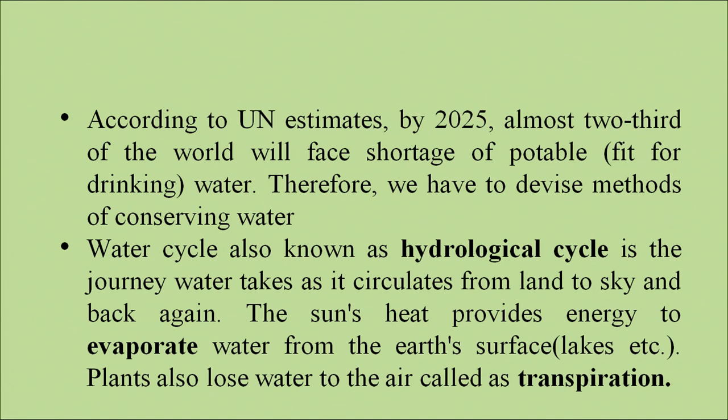According to UN estimates, by 2025 almost two-thirds of the world will face a shortage of potable — that is, drinking — water. Therefore, we have to devise methods of conserving water. The water cycle, also known as the hydrological cycle, is the journey water takes as it circulates from land to sky and back again. The sun's heat provides energy to evaporate water from the earth's surface. Plants also lose water to the air through transpiration. So evaporation and transpiration are the two processes through which water reaches the air, and there are two processes that bring it back down.